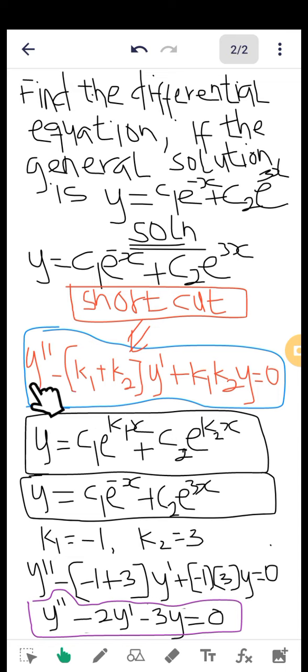Then we try to use this expression. This is the shortcut to find the differential equation straightforward. Because the constants are two (c1 and c2), it means the derivative will be of second order.